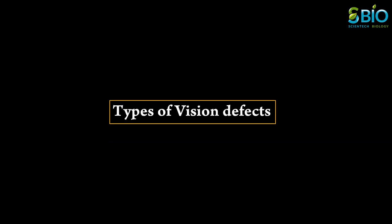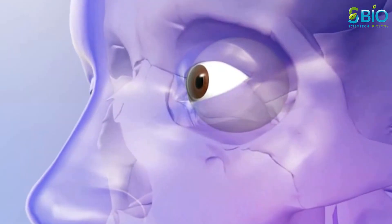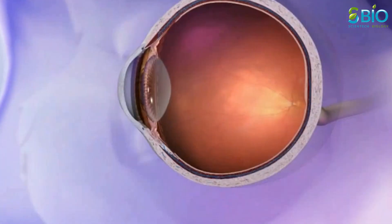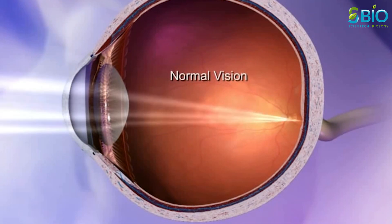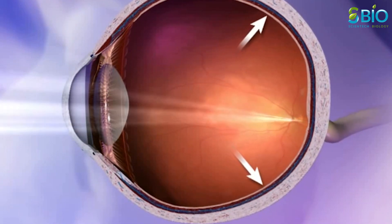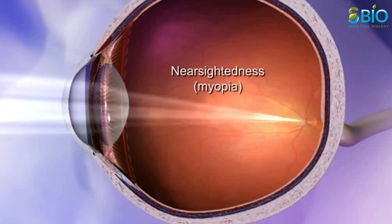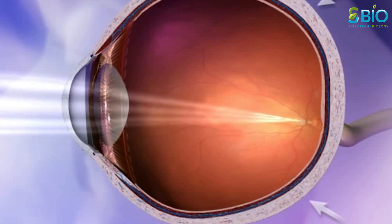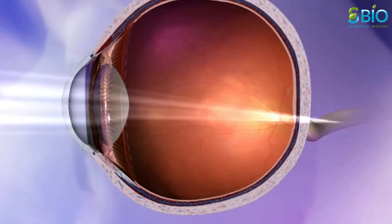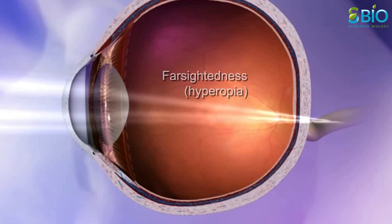Types of vision defects: The shape of the eyeball affects vision. In normal vision, the lens focuses light onto the retina and an image is perceived. In the case of nearsightedness, the point of focus does not reach the retina and the image appears blurry. Farsightedness results when the eye is too shallow, causing the image to be focused on an area beyond the retina.